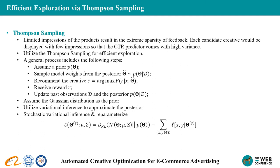We again sample model weights from the posterior and continue our algorithm. As the posterior cannot be resolved in closed form, we utilize variational inference to approximate the posterior. Stochastic variational inference and the reparameterization trick are used for optimization. Finally, the objective function consists of two terms: the first is the KL divergence between the prior and the posterior of the model parameters, and the second is the loss function over the observations.